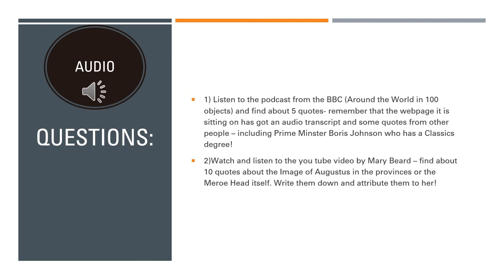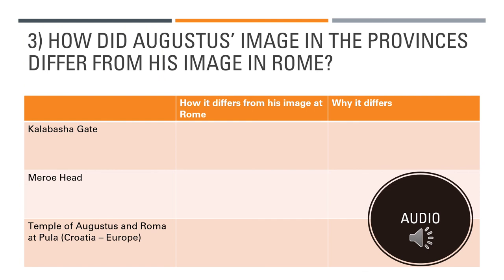Here are some summary questions for you. Number one, listen to the podcast from the BBC — 'A History of the World in 100 Objects' — that's slide eight; find about five quotes. Remember the web page has got an audio transcript and some quotes from other people, including the Prime Minister Boris Johnson, who's actually got a classics degree. Question number two, watch and listen to the YouTube video by Mary Beard and find about 10 quotes about the image of Augustus in the provinces or the Meroe Head itself. Write them down and please remember to attribute them to her. These are the sort of things that you can put into a 30-mark essay to show that you really understand what other classicists are thinking.